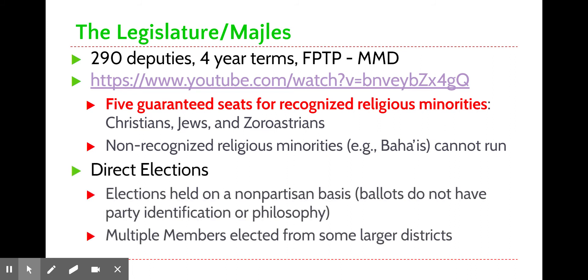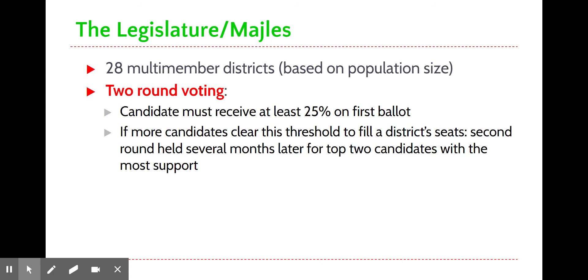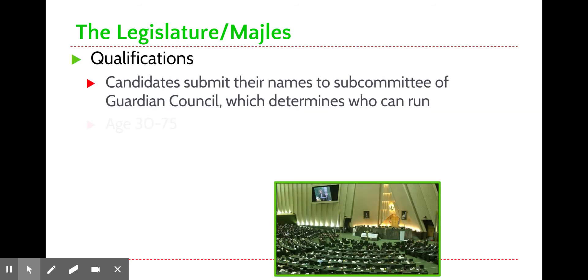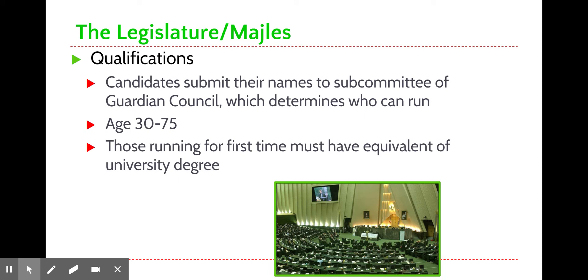Majlis elections follow similar qualifications to the presidency, and the most important part is the vetting that takes place by the Guardian Council — they bar a lot of people from running. This is often seen as a source of potential corruption, since small groups choosing who can and cannot run in an election naturally opens the door to corrupt practices.